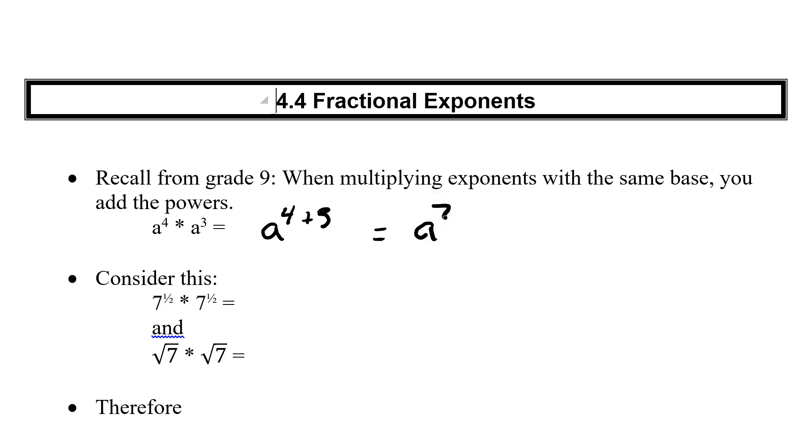So now we're going to try to apply this concept when we're doing fractional exponents. Let's consider this: 7 to the exponent of a half times 7 to the one half. Well, with our rule that we just saw, we have the same base. So this would be 7 to the one half plus a half, which is 7 to the one, otherwise known as 7.